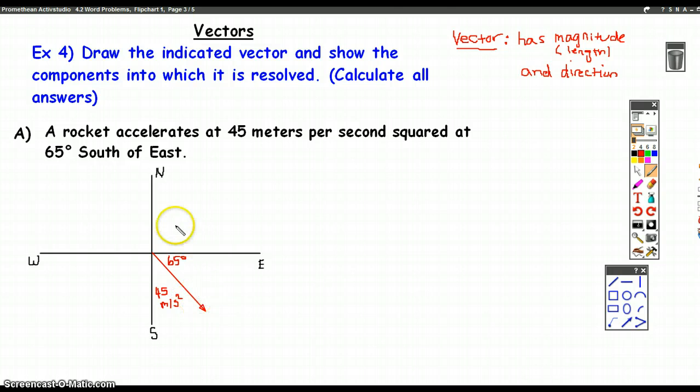Now what I have to do is, it says draw the indicated vector. Okay, so we did that. Show the components into which it's resolved.